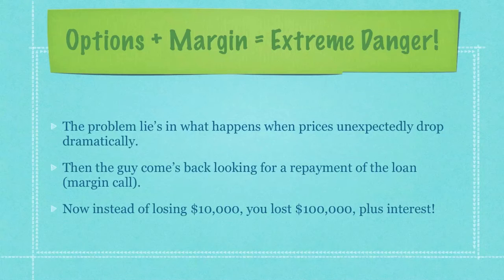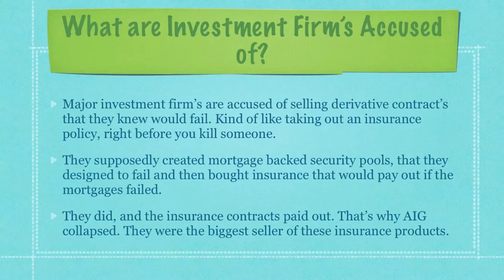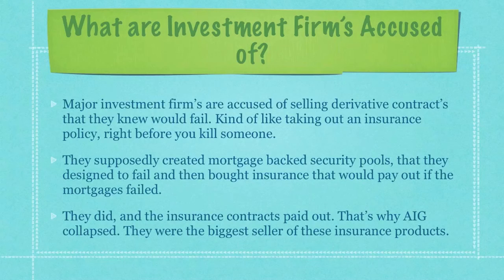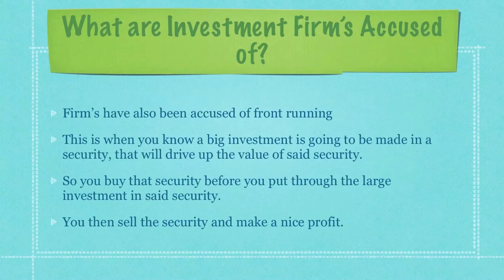If you leave a comment below, I will do a presentation on Long-Term Capital Management. So what are investment firms being accused of currently in 2010? Major investment firms are accused of selling derivative contracts that they knew would fail — kind of like taking out an insurance policy right before you kill somebody. They supposedly created mortgage-backed security pools designed to fail and then bought insurance that would pay out if the mortgages failed. Well, they did, and the insurance contracts paid out. That's why AIG collapsed — they were the biggest seller of these insurance products. Firms have also been accused of front-running: when you know a big investment is going to be made in a security that will drive up its value, you buy that security first, then sell it after the large investment goes through to make a nice profit.